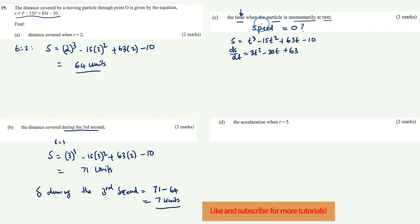If this object is at rest, the speed equals 0. So we make 3t squared minus 30t plus 63 equal to 0. All these terms are divisible by 3, so I'm going to simplify the equation. Dividing by 3 throughout gives t squared minus 10t plus 21 equals 0.